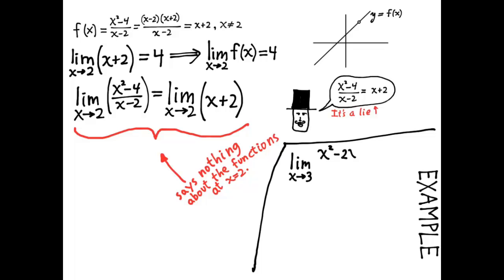Here's a 0 over 0 form limit: the limit as x approaches 3 of x squared minus 2x minus 3 over 2x squared minus 7x plus 3. We have a numerator and a denominator, both of which go to 0 when x goes to 3. So we'll factor them. And when we factor them, we find they both have a factor of x minus 3. And that factor of x minus 3 is what makes it go to 0.